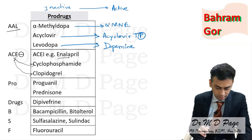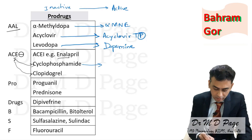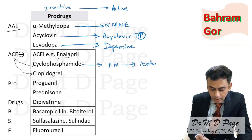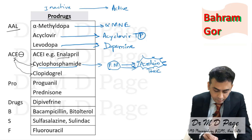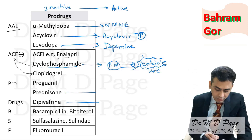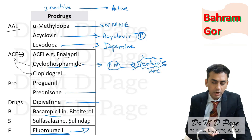Cyclophosphamide gets converted to aldophosphamide or phosphoramide mustard, which is the active metabolite; phosphoramide mustard is further converted to acrolein, which is a toxic metabolite. So cyclophosphamide is inactive, phosphoramide mustard is the active metabolite, and acrolein is a toxic by-product. Similarly, prednisone converts to prednisolone, and 5-fluorouracil converts to fluorouridine monophosphate. All these drugs are inactive and their active metabolites are produced after biotransformation.